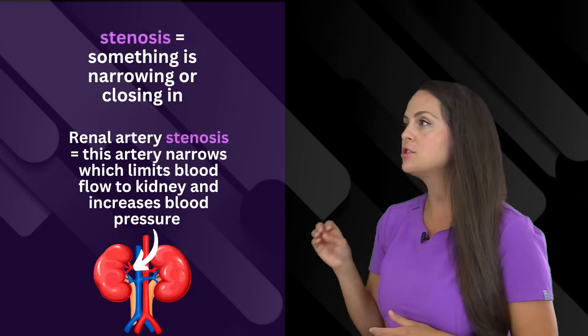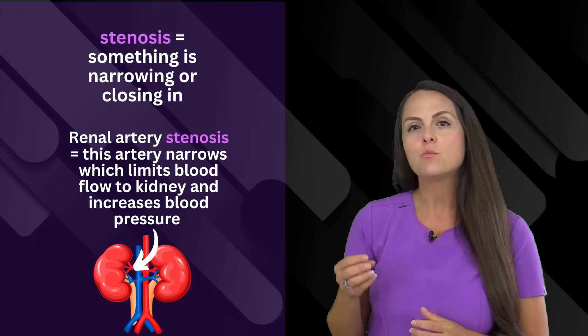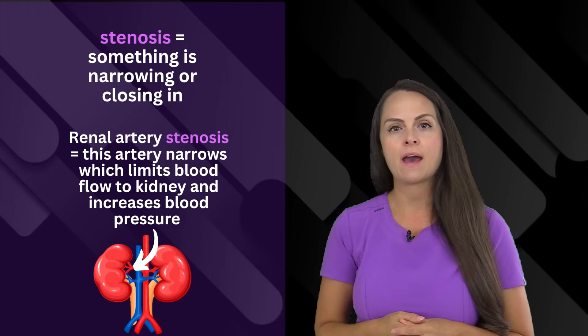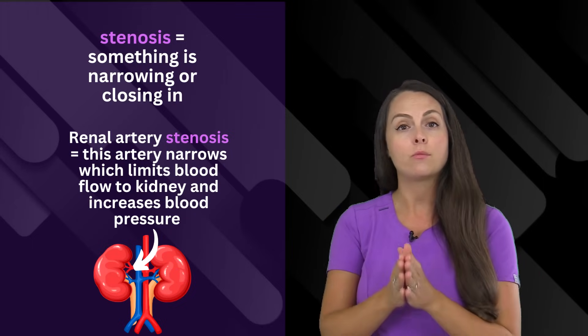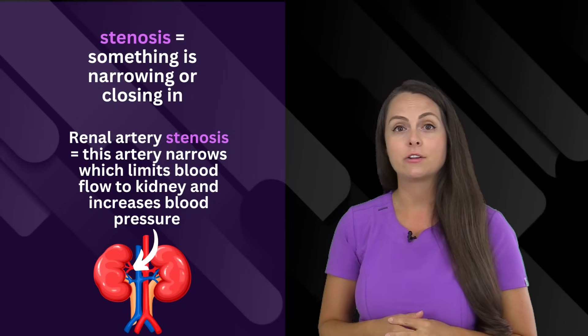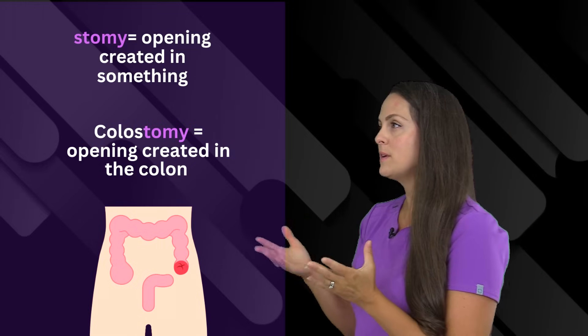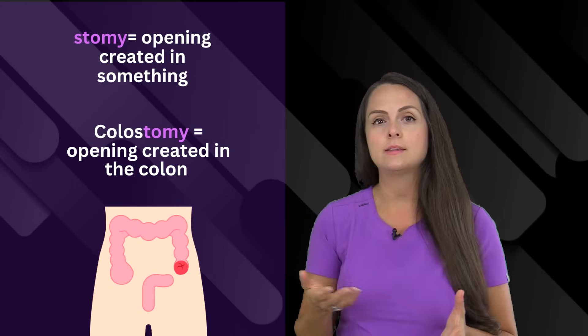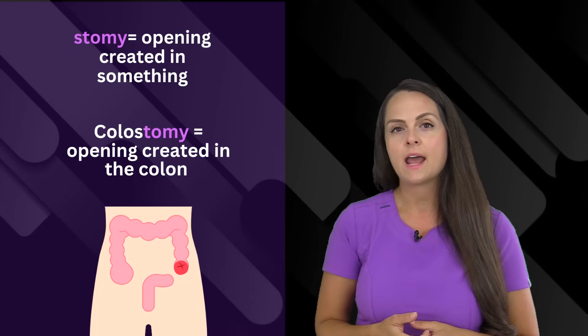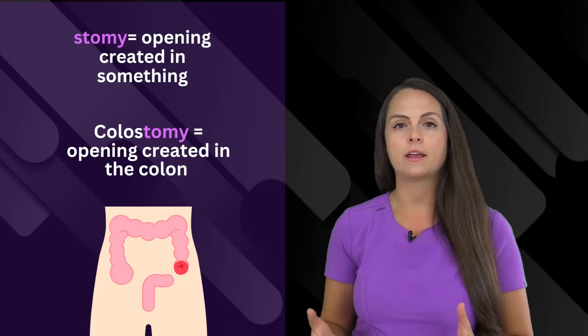Then we have stenosis, which means narrowing or closing in of something. In renal artery stenosis, we're having the narrowing of that renal artery, which can impede blood flow to the kidneys and increase the blood pressure. Then there's stomy, which means we have created an opening in something. Whenever a person has a colostomy, they have an opening that has been created in their colon.